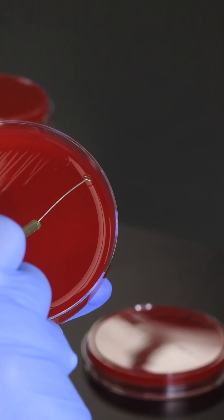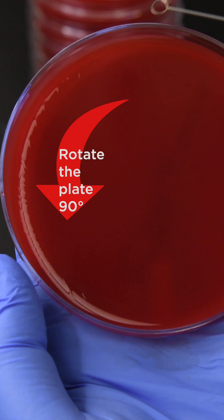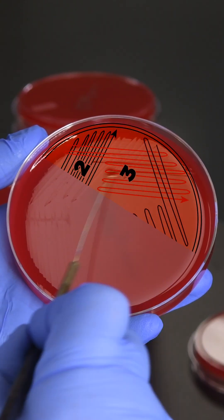Re-sterilize and cool the loop in the agar. Rotate the plate another 90 degrees and spread the cells from quadrant two into quadrant three.